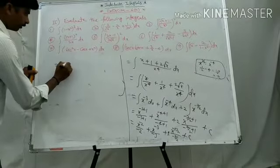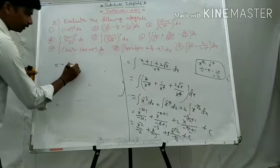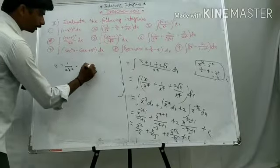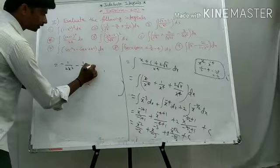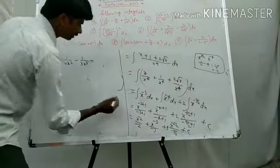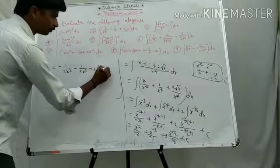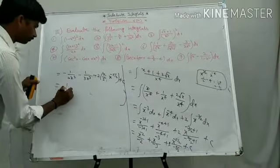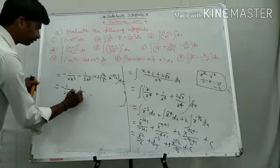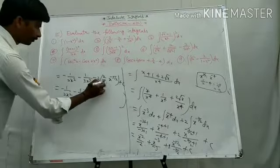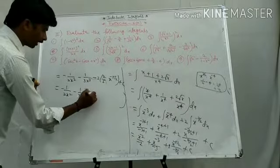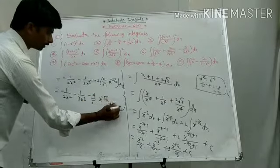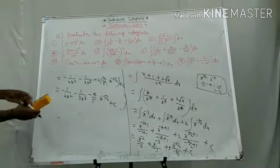That equals minus 1 by 2x squared minus 1 by 3x cubed minus 4 by 5 times x to the power of minus 5 by 2 plus c. This is the third solution.